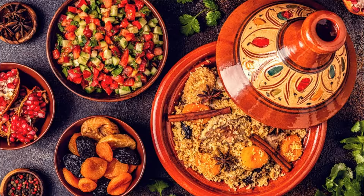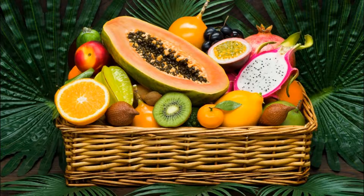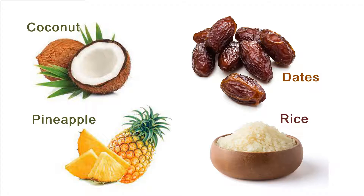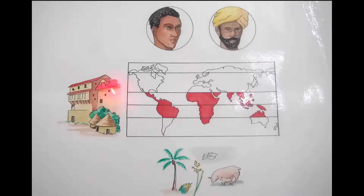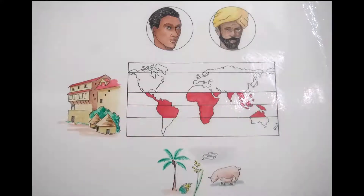Often there is an abundance and variety of food to eat. Things grow in the tropics that we can't grow in other places, like coconut, pineapple, dates, and rice. When we go to the store to buy these things, they are actually from the tropics. Lots of things grow here in the tropics because the conditions are good — warm climate, a lot of sunshine and rain.